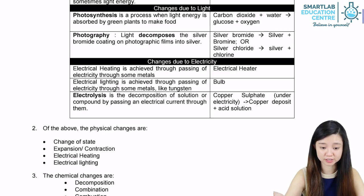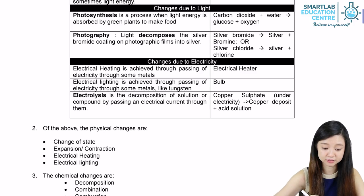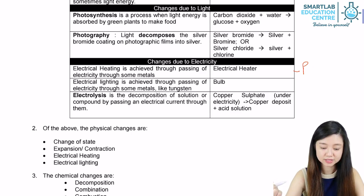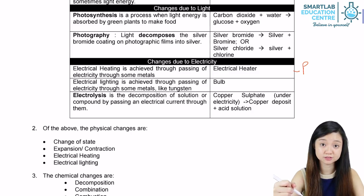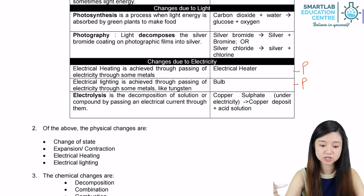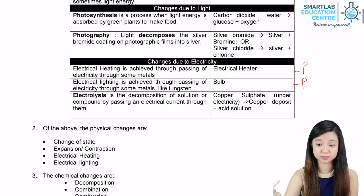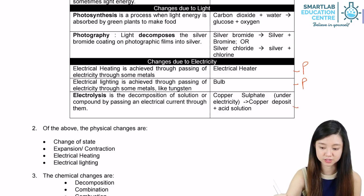For changes due to electricity: electrical heating is achieved by passing electricity through some metals, and no new substance is being formed, so this is a physical change. Electrical lighting is achieved through passing electricity through metals like tungsten — again, no new substance is formed, so it's a physical change. The last one is electrolysis — the decomposition of a solution or compound by passing an electrical current through it — and new substances are formed, so this is a chemical change.